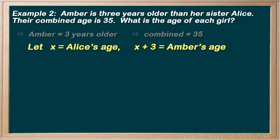We're on to step 3. Translate and solve. We're told that the combined age is 35. So, Amber's age, that is x plus 3, plus Alice's age, x, comes out to be 35. And we're ready to solve.